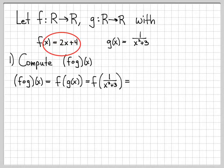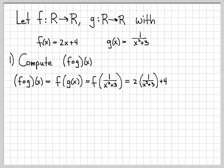So evaluating f at 1 over x squared plus 3 means we need to look up here at the definition of f, and every x that we see, we need to replace with 1 over x squared plus 3. So there's only one x up there, so we replace the 2 times x with 2 times 1 over x squared plus 3. And then we have to tack on the plus 4, because that's what the definition of f of x has in it.